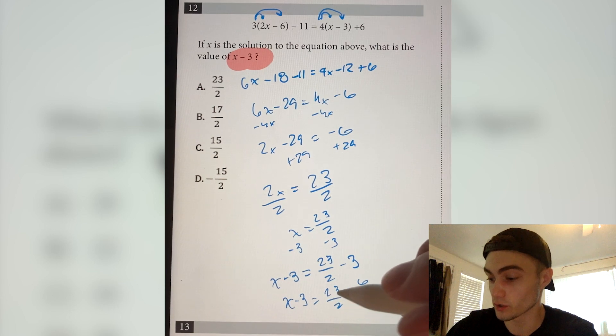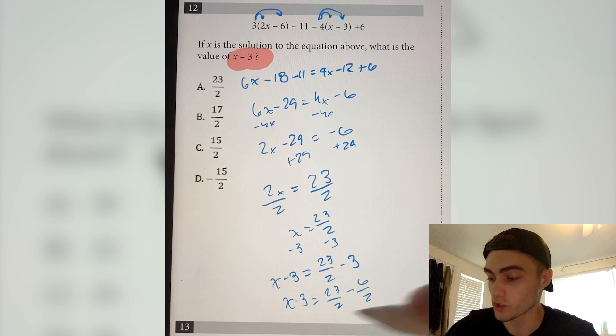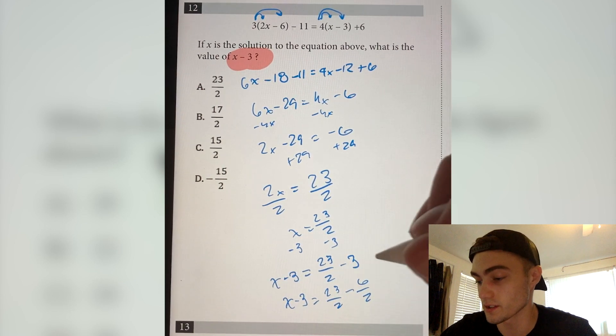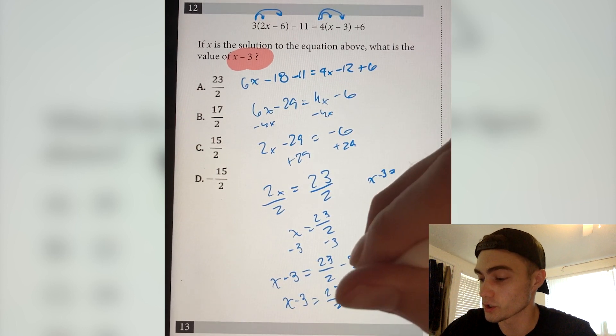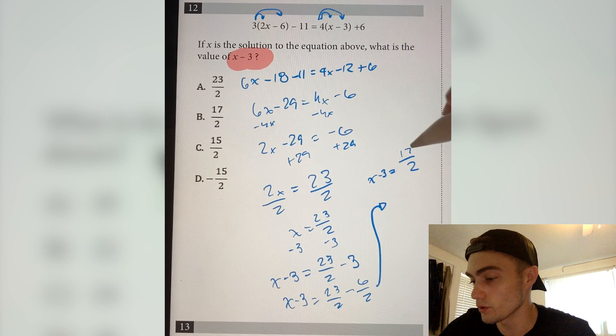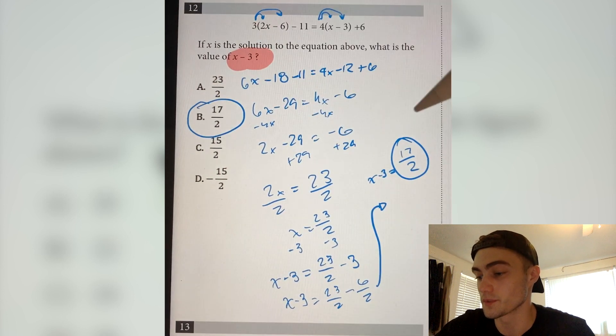So x minus 3 is equal to 23 over 2 minus 6 over 2. Now I can easily subtract these fractions. So now x minus 3 is equal to 23 minus 6, which is 17 over 2. That is our answer, which is B.